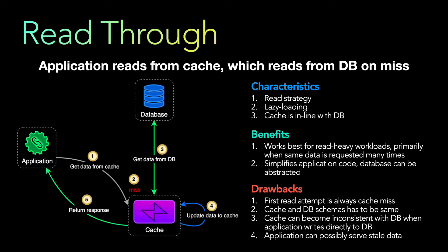Some drawbacks of read-through: the first read attempt is always a cache miss because the cache is not pre-populated, so it must first go to the database, update the cache, and then return the response. The application can also possibly serve stale data, and the cache can become inconsistent with the database when the application writes directly to the database. Also, the cache and database schemas must be exactly the same, which is a constraint.